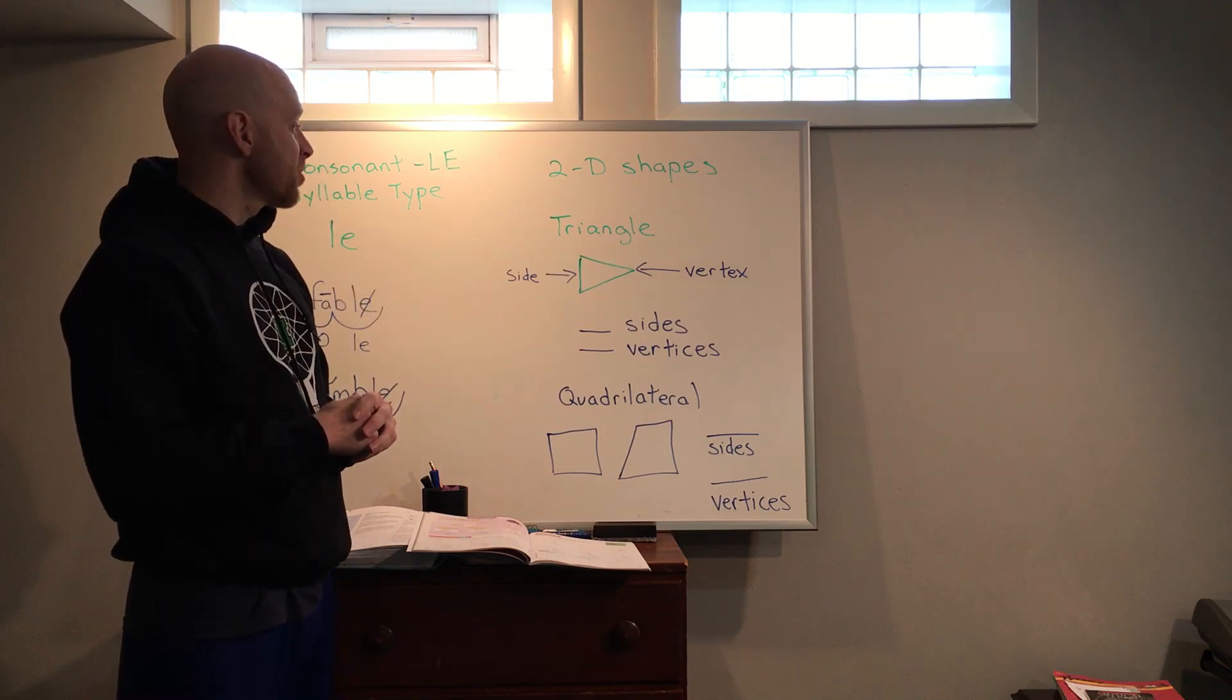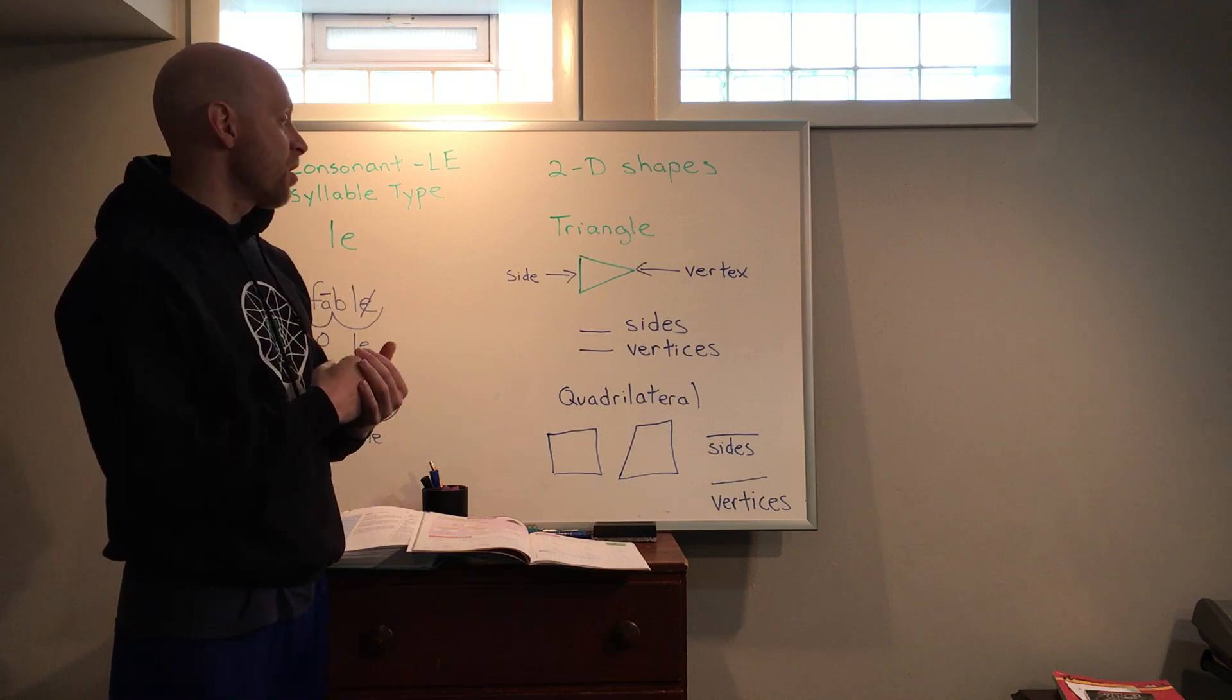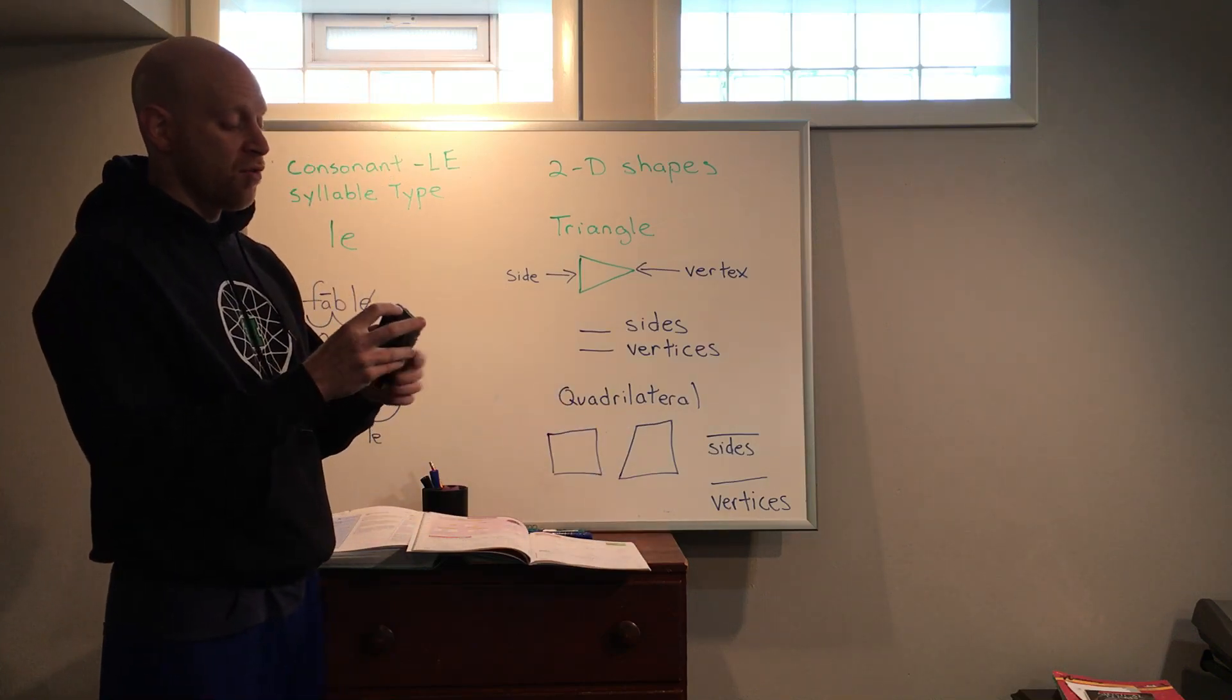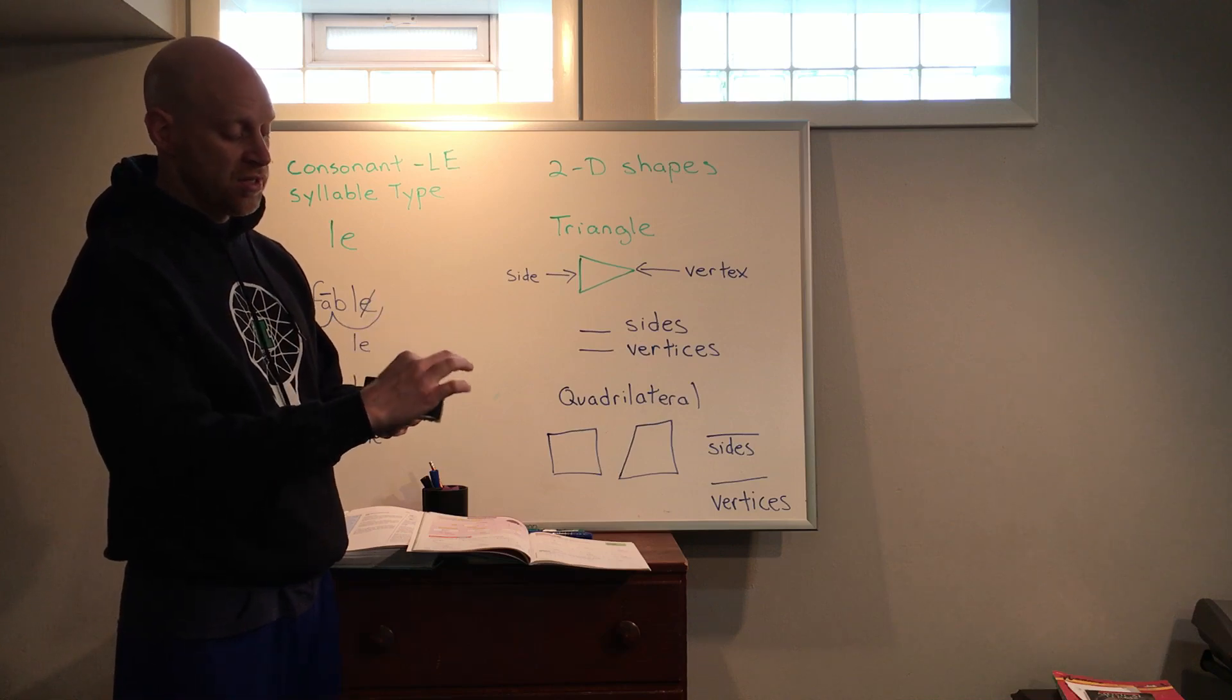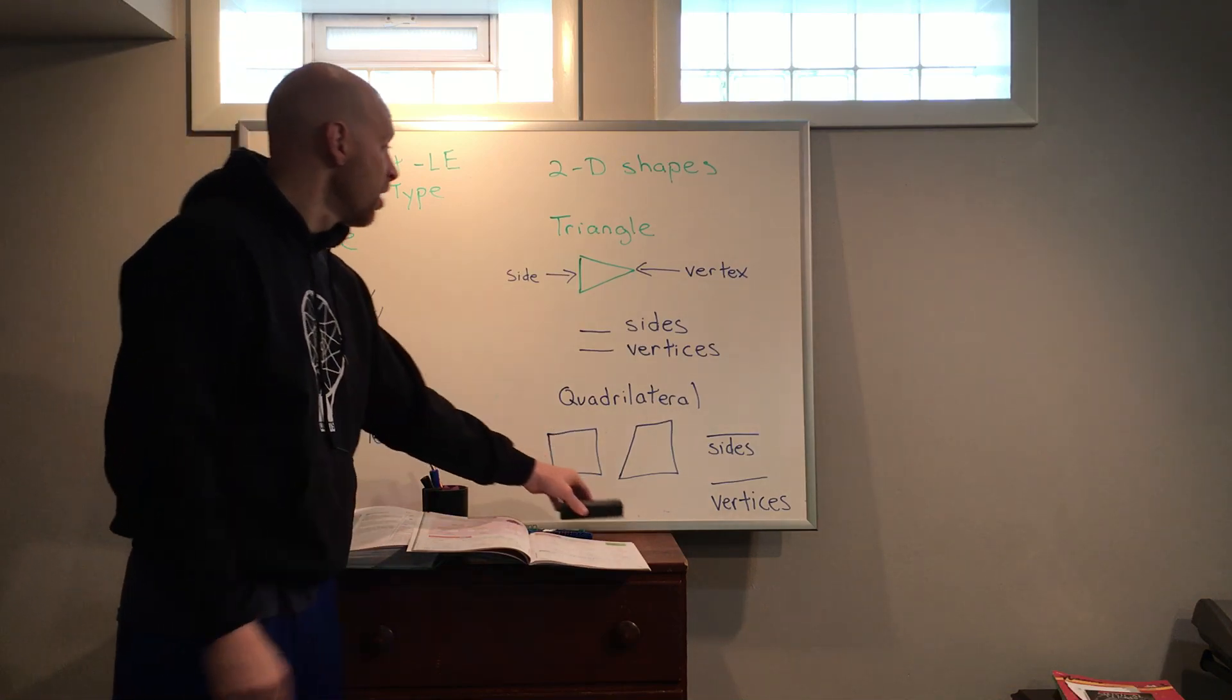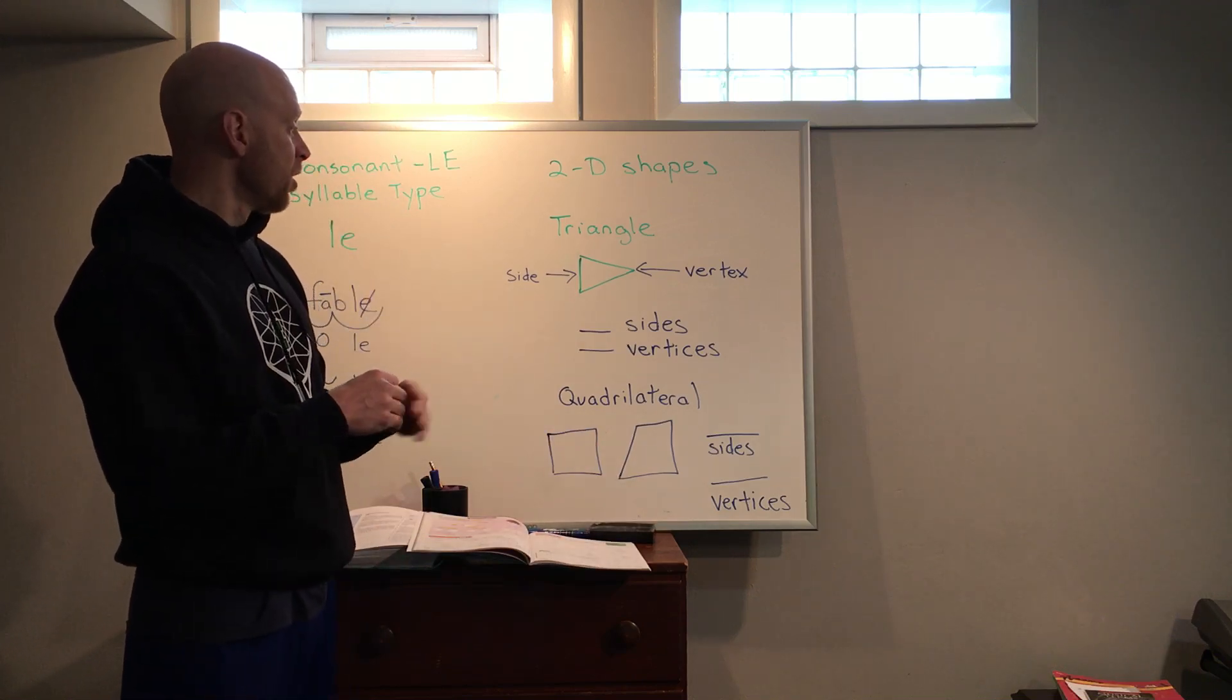Last week we also talked about what a vertex is. A vertex is a point on a 3D shape where we have the faces and the edges kind of come together, that sharp point. Well we actually have a vertex on 2D shapes as well.